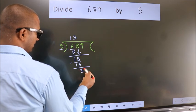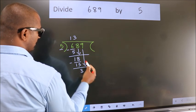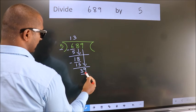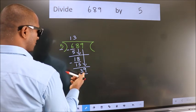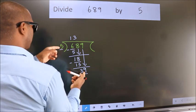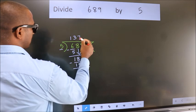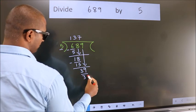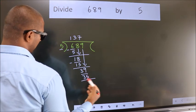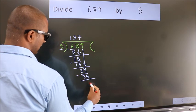After this, bring down the beside number. So, 9 down. So, 39. A number close to 39 in 5 table is 5 sevenths 35. Now, we subtract. We get 4.